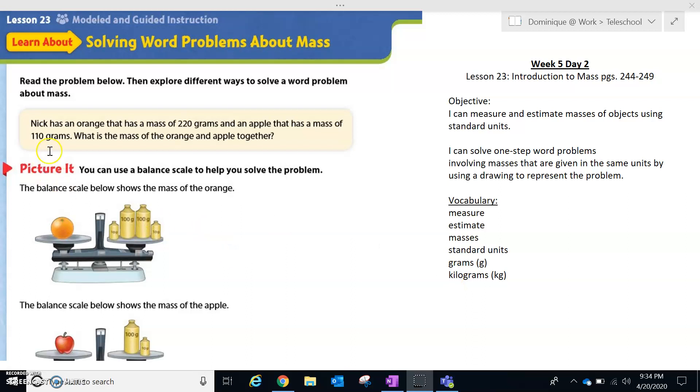So now let's look at our problem. It says Nick has an orange that has a mass of 220 grams. Let me backtrack for a minute before we get into this. Remember when we talked about it yesterday, we said that one gram is equal to one paperclip, and one kilogram is equal to one hardcover book. Now back to our problem. Nick has an orange that has a mass of 220 grams, and an apple that has a mass of 110 grams. What is the mass of the orange and apple together?